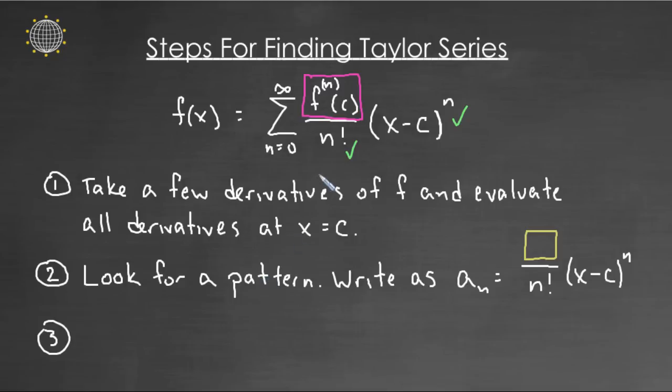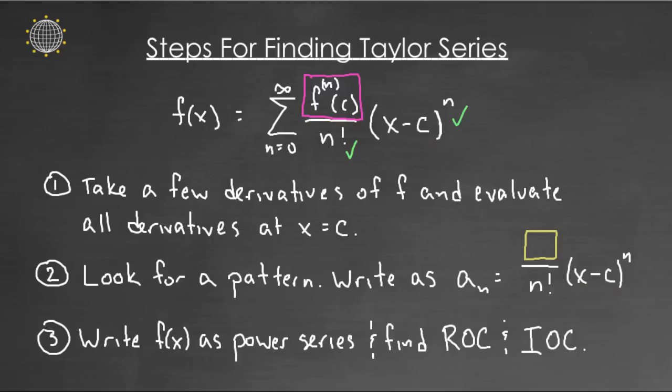So now what's this pattern going to look like? Well, the n factorial will always be n factorial. The x minus c to the n will always be x minus c to the n. And I mentioned that earlier. The only thing that's going to change is going to be this numerator. That's where you're looking at step one and looking at the first few derivatives and trying to find a pattern. So if you can do that, then we're basically done.